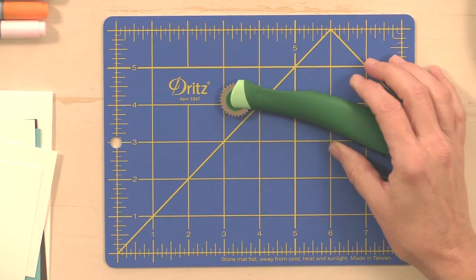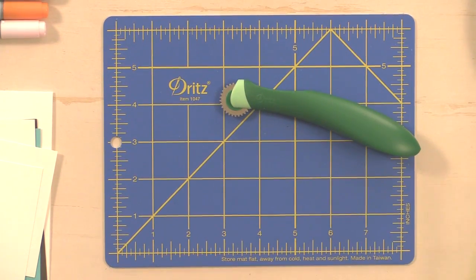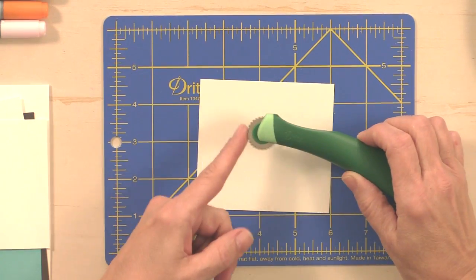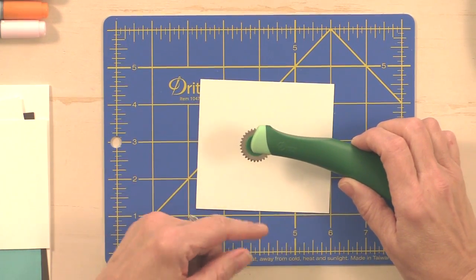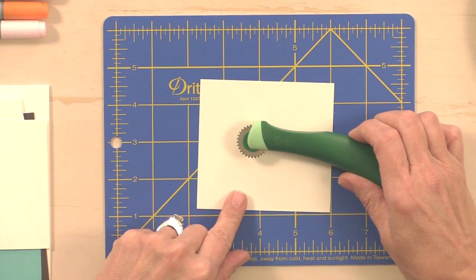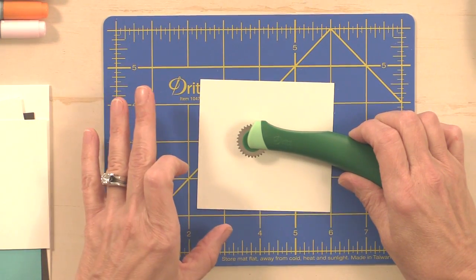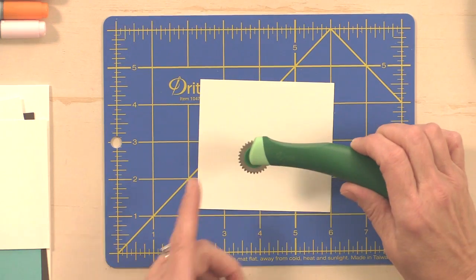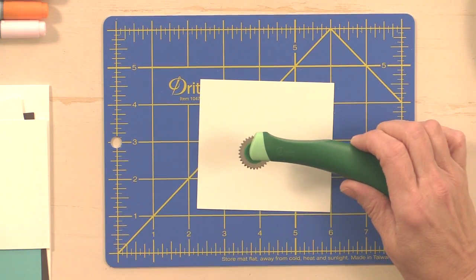I also have a tracing wheel. A lot of you probably have one of these in your sewing box tucked away in the basement. This one has nice deep grooves. It's a fun product to use for transferring lines onto fabric to take in darts and things like that. But for crafting, it makes really cool stitched lines.